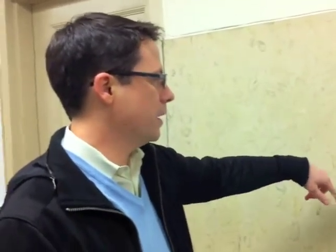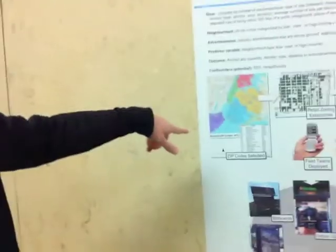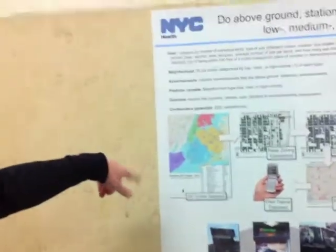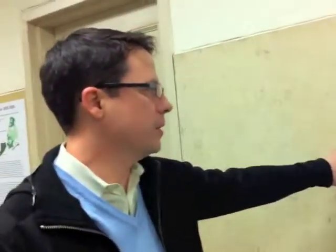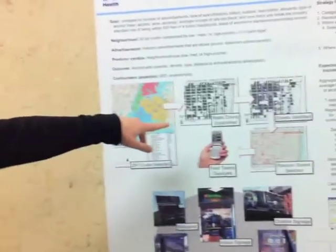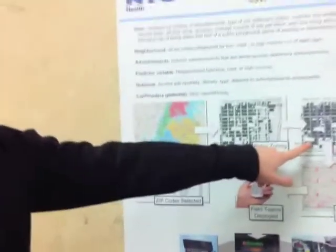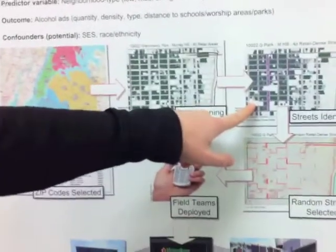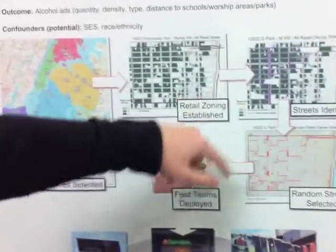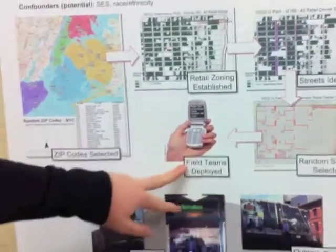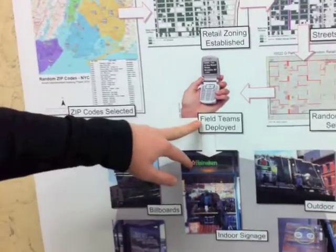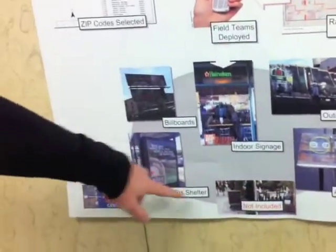What this is, is we have basically an ongoing research project with them where we've taken a random sampling of zip codes. We've established the retail zoning within those zip codes, and then we've randomly selected streets where we find a saturation of retail zoning. And then training field teams with the use of GeoChat, we deploy them to capture a variety of alcohol advertisements.